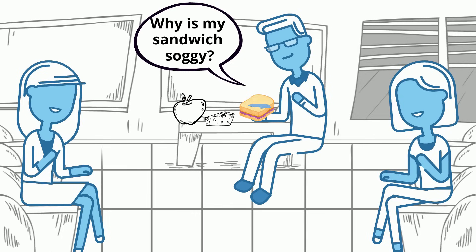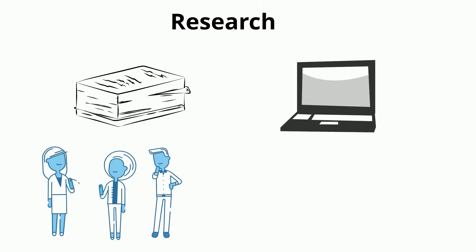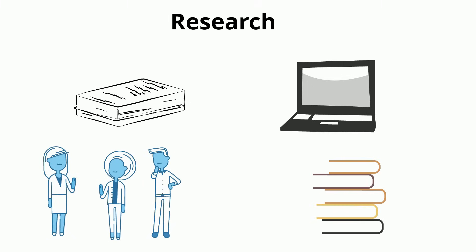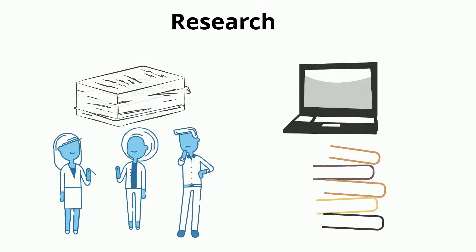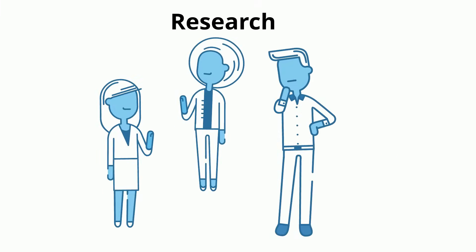You then decide to conduct research. Research can take many forms, such as trusted scientific journals, online resources, conversations with friends, books, and articles. You start by asking your friends who also eat peanut butter and jelly sandwiches, and also go online and discover that most people prefer their PB&J in a solid container.